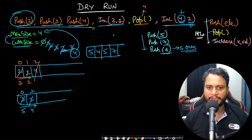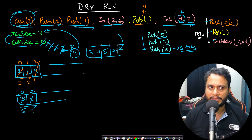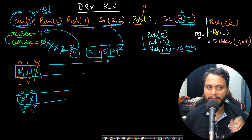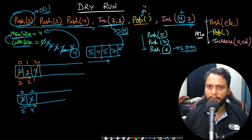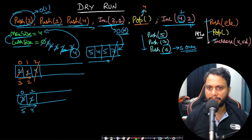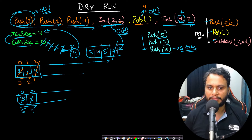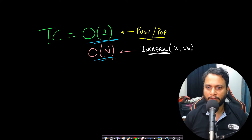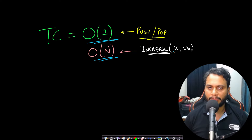For time complexity: the push operation appends to the end of the dynamic array, which is O(1). The increment operation moves from index 0 to index k, which in the worst case is n items (max size), so it is O(n). The pop operation removes the last item from the dynamic array, which is also O(1). So push and pop are O(1), and increment is O(n) where n is the max size.